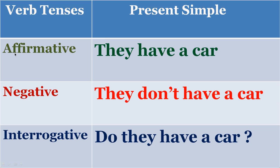We will be seeing them in affirmative, negative and interrogative — every sentence, every verb tense. Now in the present simple form, how does a sentence look? Affirmative: 'They have a car.' That's an affirmative present simple. The same thing in negative: 'They don't have a car.' And interrogative: 'Do they have a car?' Same example in simple present tense.